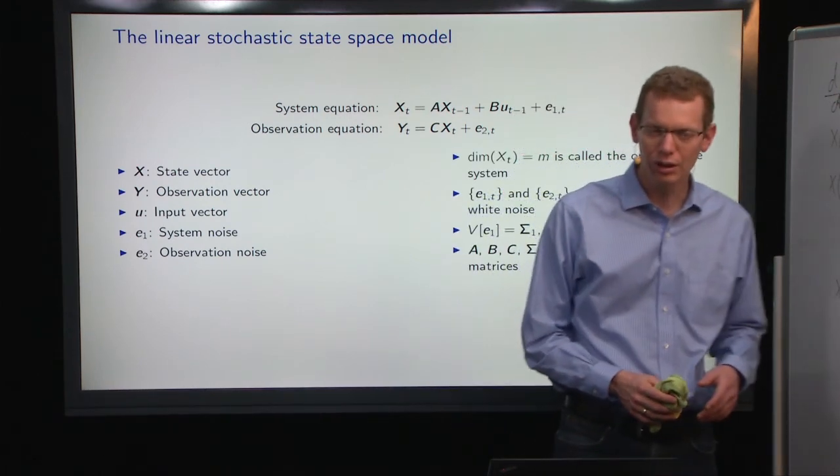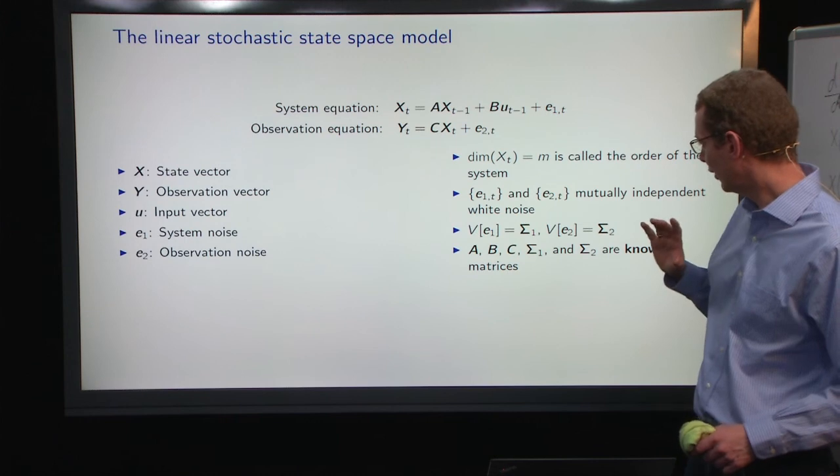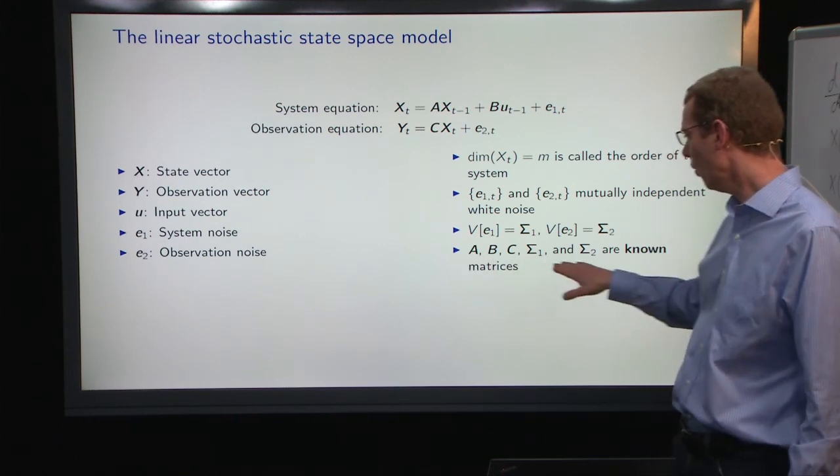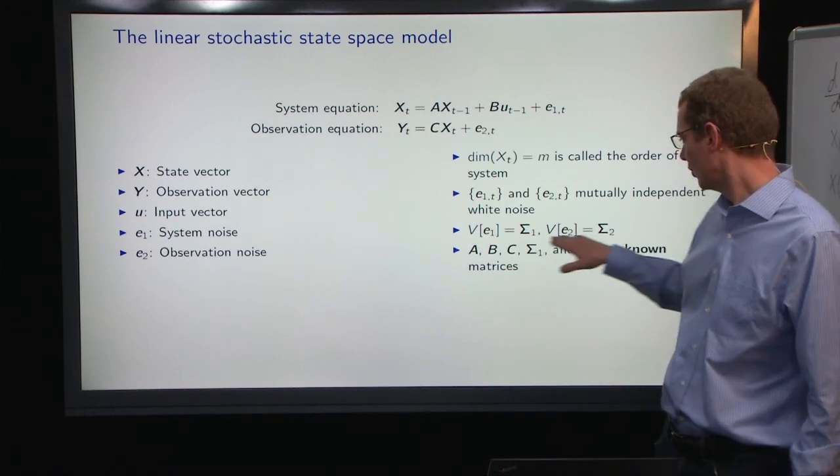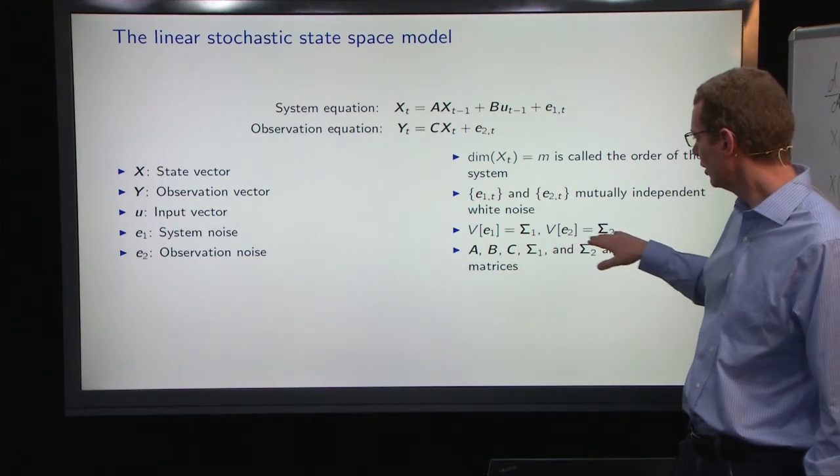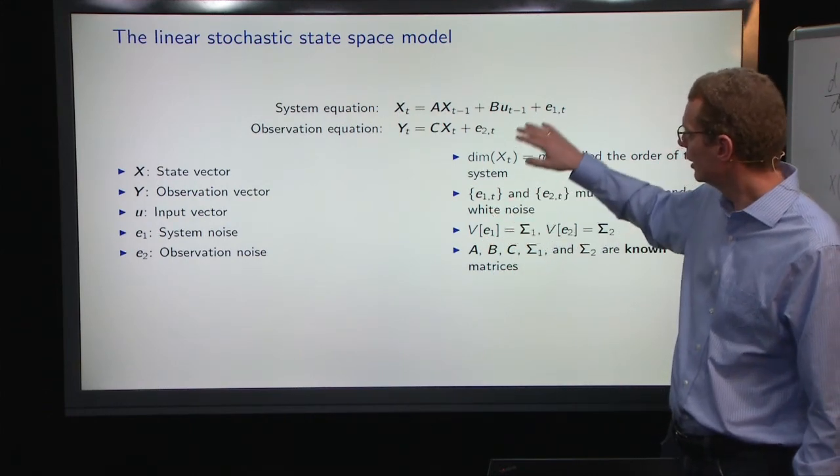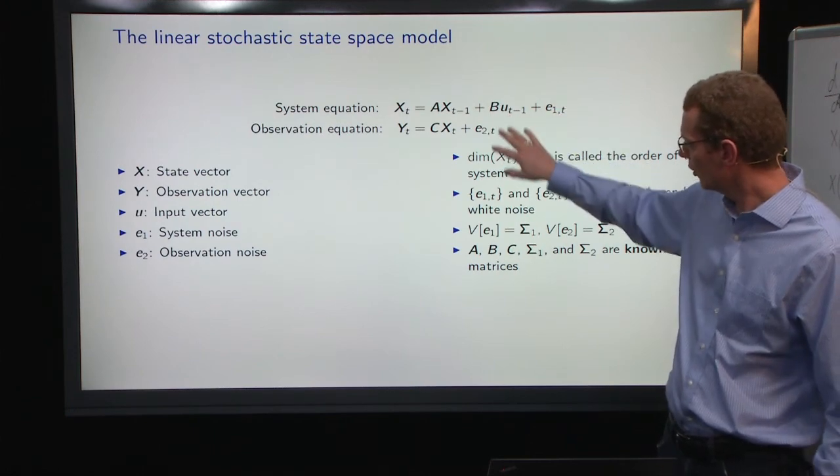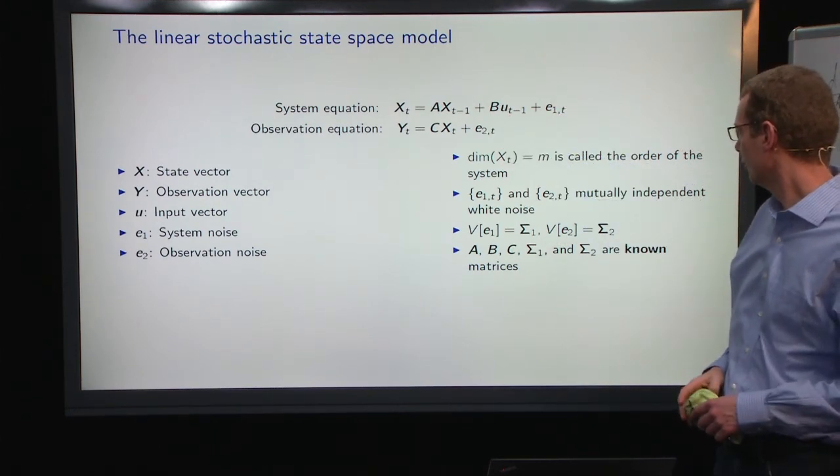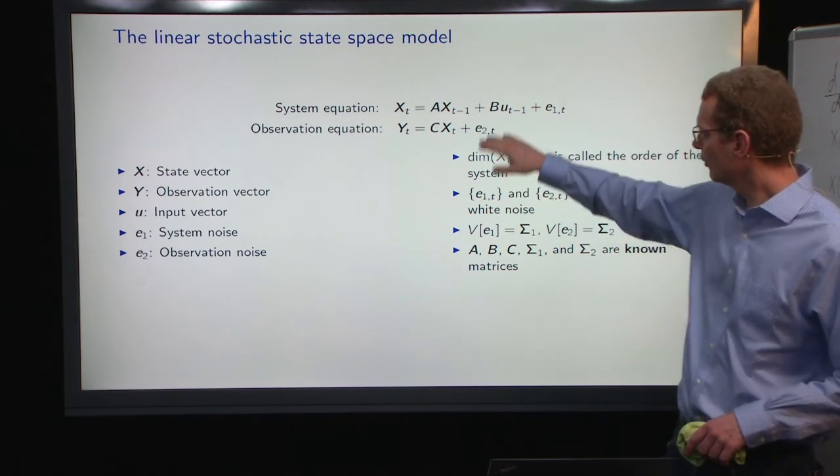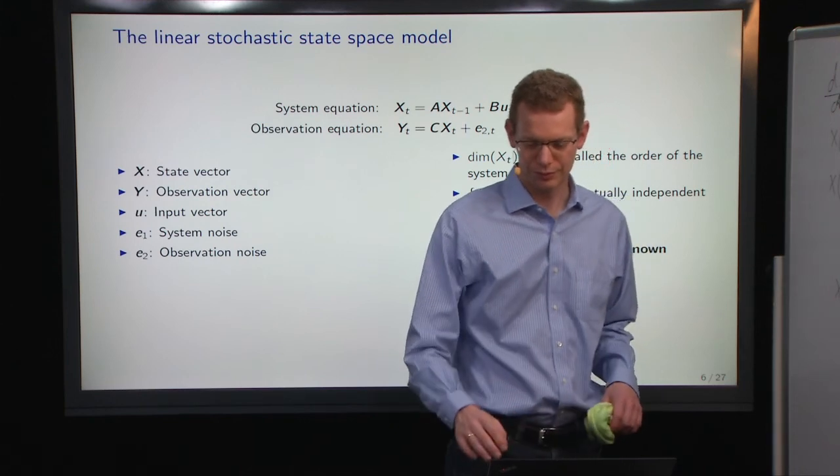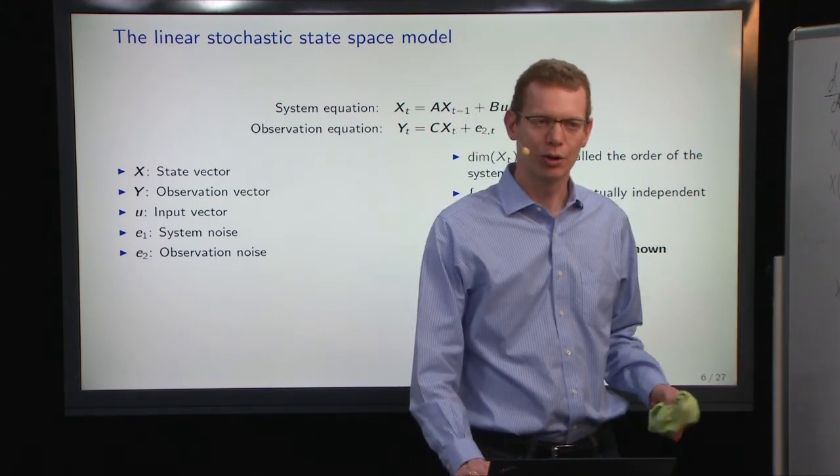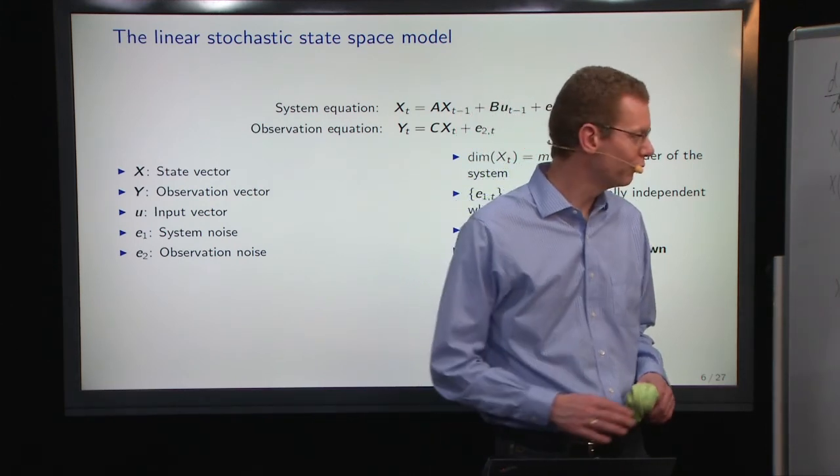One thing that is important is that we say that for now we assume that we know all these coefficient matrices and also the covariance matrices here, and we also assume that the system noise and the observation noise are independent. We define the dimension of x as the dimensional system order that we're looking at. So that is the general formulation.